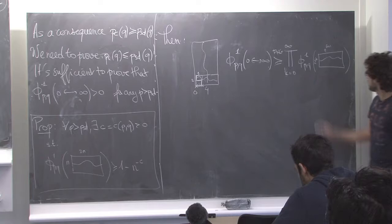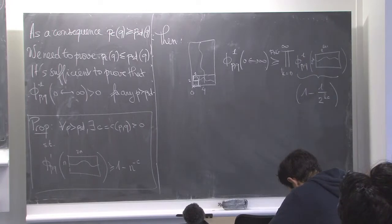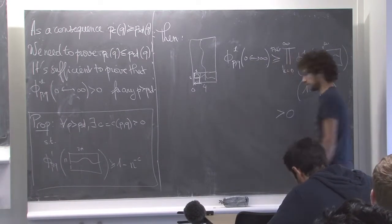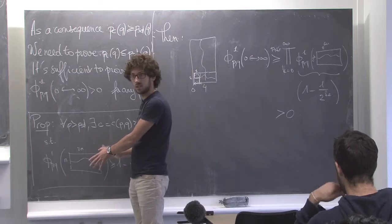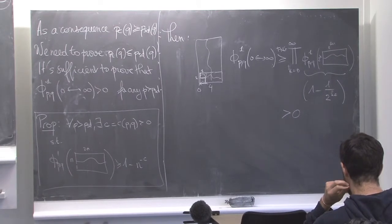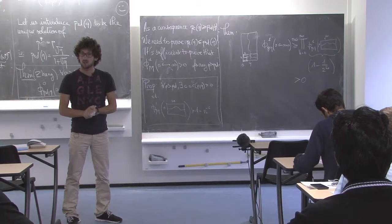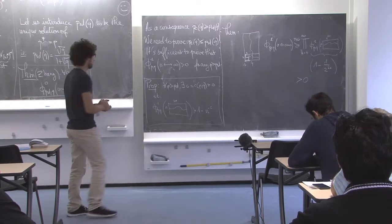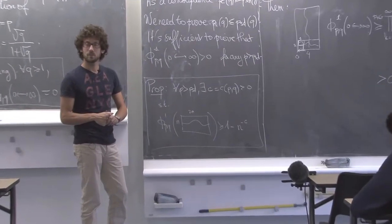The probability at the k-th step is 1 - 1/(2^k · C), and this infinite product converges, so it's strictly positive. What I just argued is that it's sufficient to prove this crossing proposition. So it's going to be sufficient to study crossing probabilities — and this is yet another argument going in the direction of why the Russo-Seymour-Welsh theory is useful.